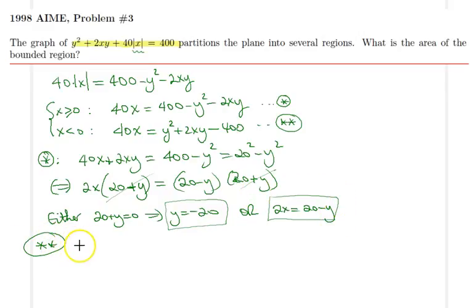Investigating the other equation, we can implement the same strategy. Move that 2xy to the left hand side: 40x - 2xy = y² - 400, which is obviously a difference of squares.